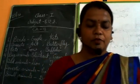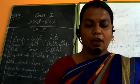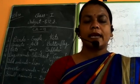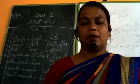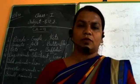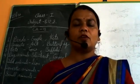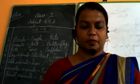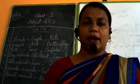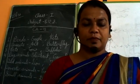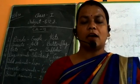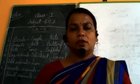Question and answer. First question: what are insects? Insects are very small animals having six legs. Next, what are wild animals? Animals that live in the forest are called wild animals.